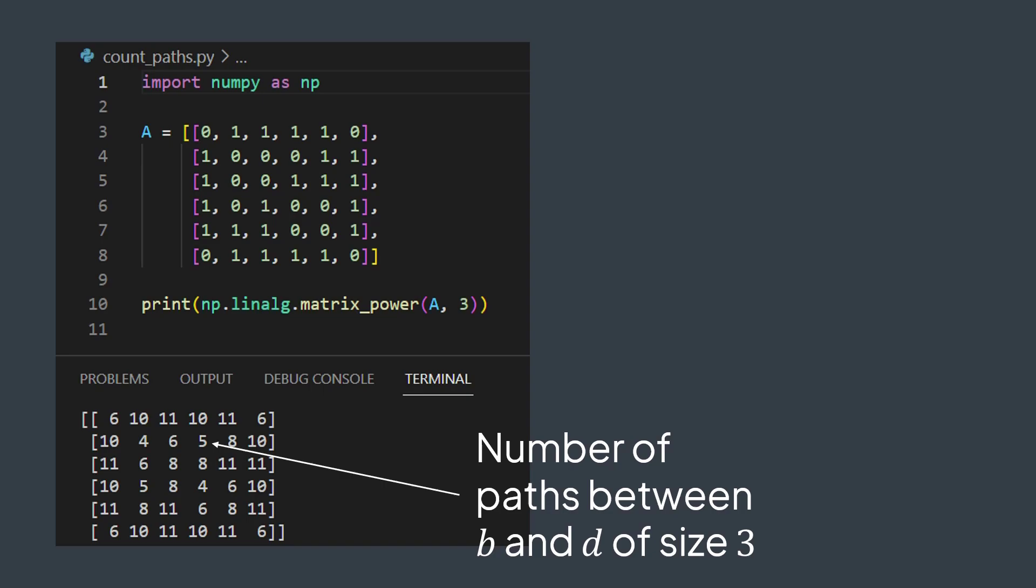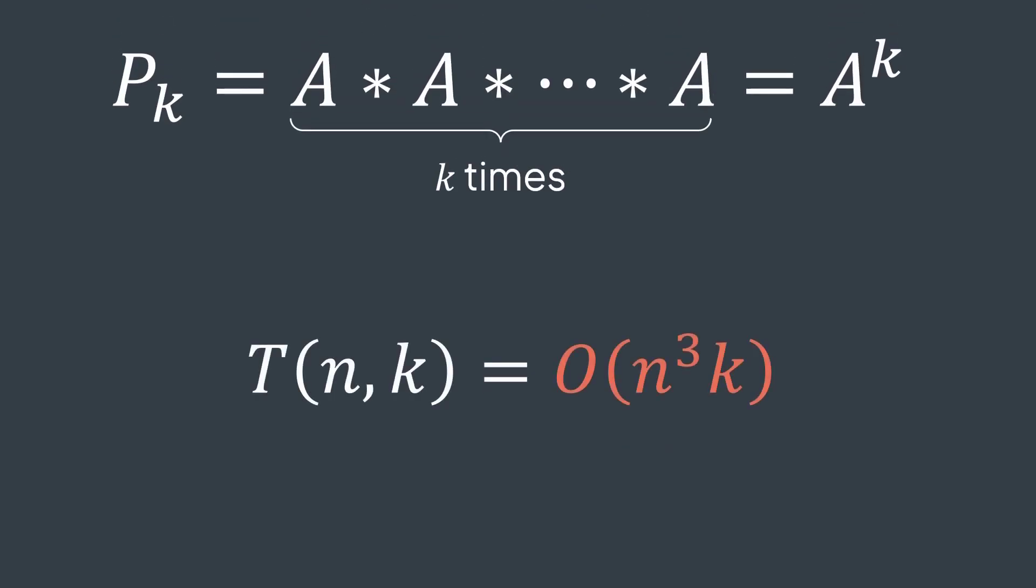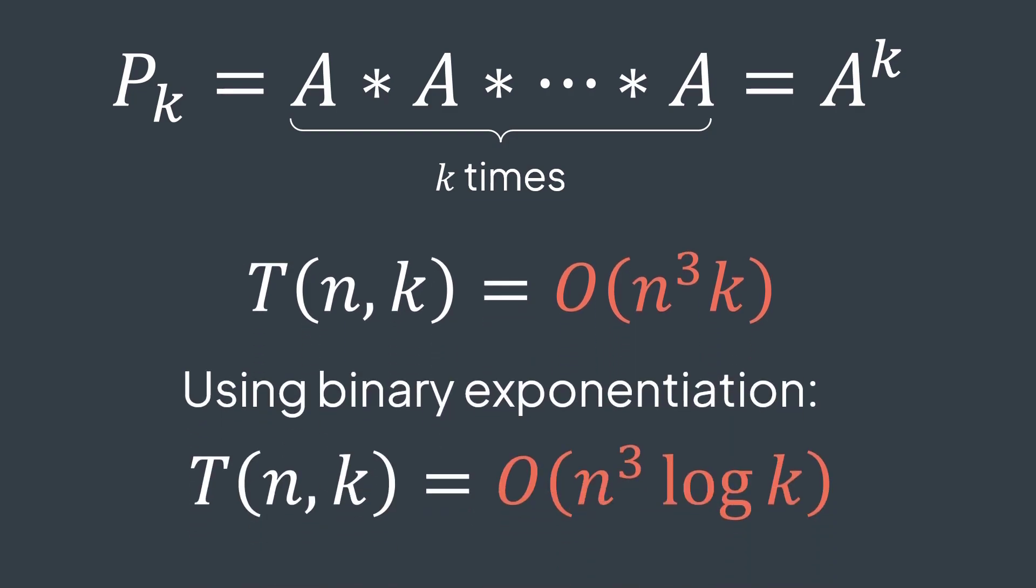If we assume that the time complexity to perform a single matrix multiplication is O of n cubed, doing it k minus 1 times gives a time complexity of O of n cubed times k, better than the previous solution. And if we introduce matrix exponentiation, we can reduce it to O of n cubed times log of k.